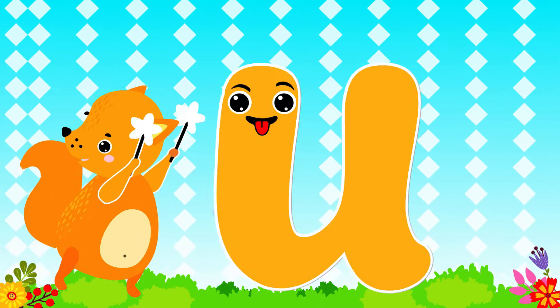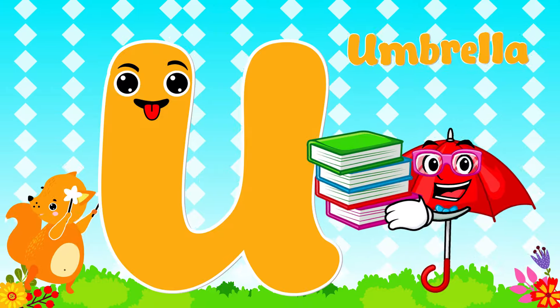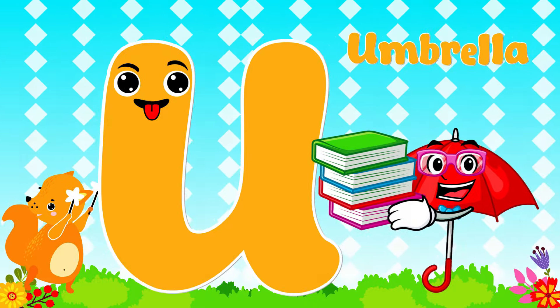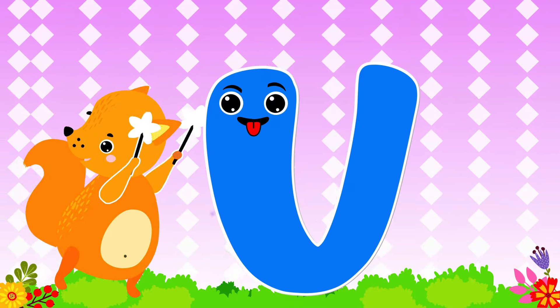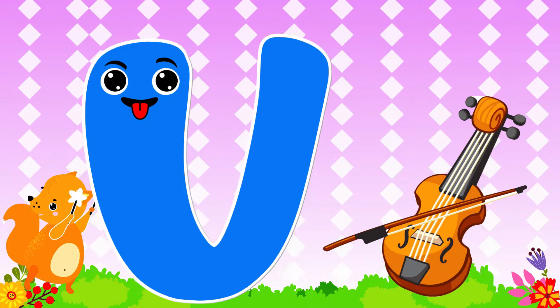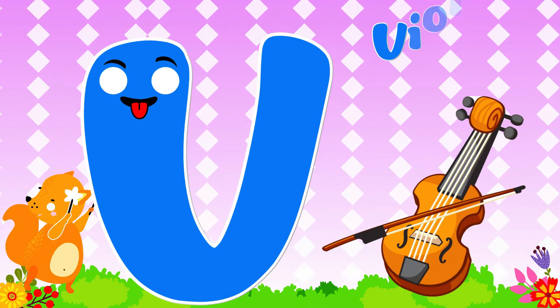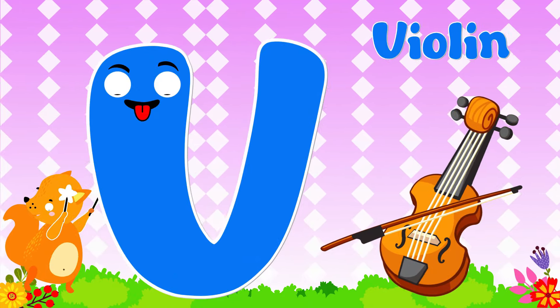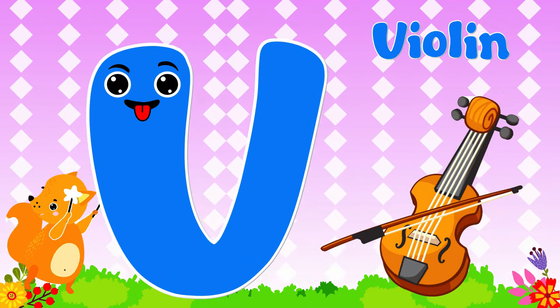U is for Umbrella. U, Umbrella. V is for Violin. V, Violin.